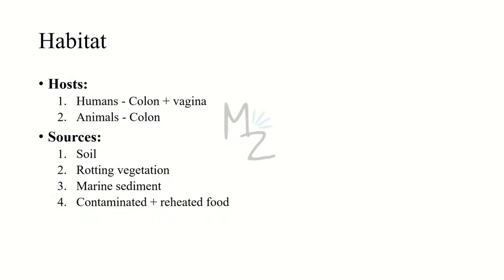Habitat. Hosts: human beings are the hosts, and the primary locations in humans are the colon and vagina, where they are part of the normal flora. It can also be found in the colon of animals. Sources include soil, rotting vegetation, marine sediment, and contaminated or reheated food.